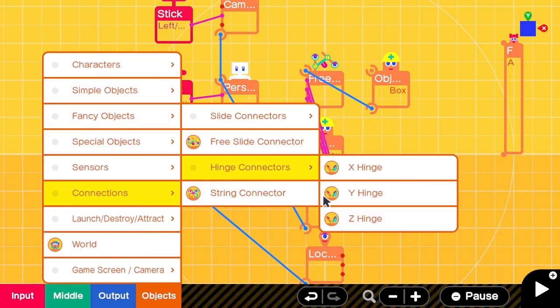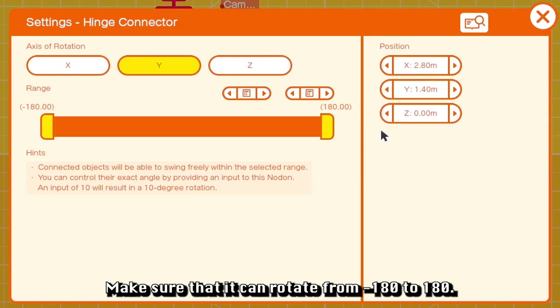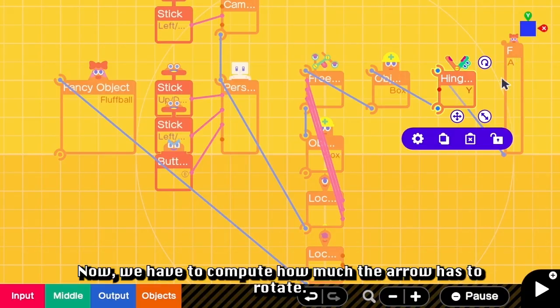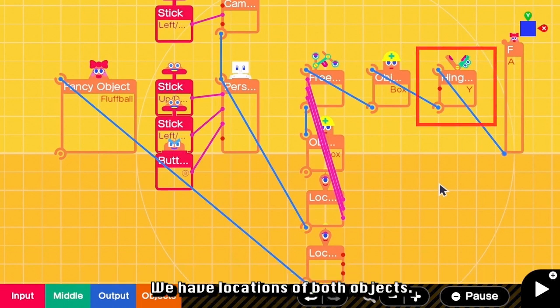Add a Y hinge connector. Make sure that it can rotate from negative 180 to 180. Now we have to compute how much the arrow has to rotate. We have locations of both objects.